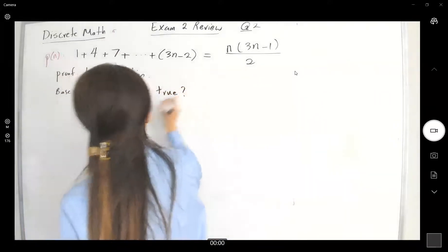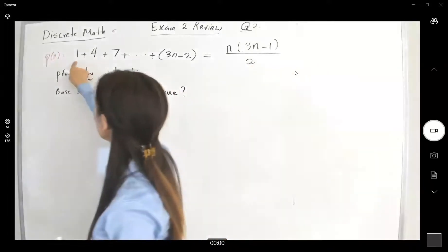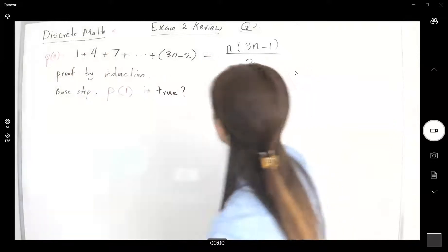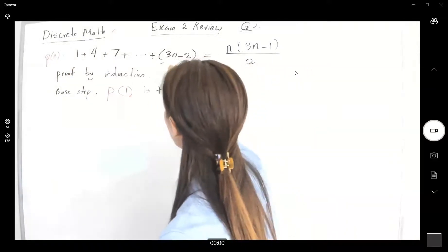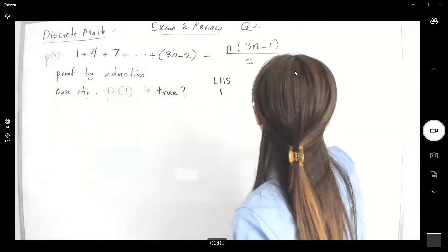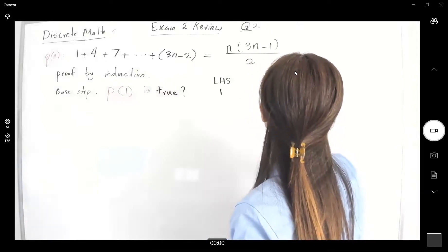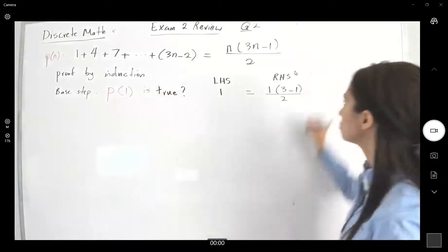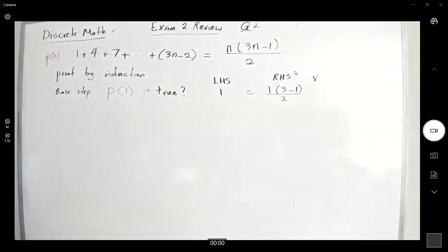Let me put a question mark next to it because I'm trying to prove this. On the left hand side, if I plug in one, I get one. On the right hand side, I have one times three minus one divided by two, which equals one. So left hand side and right hand side are both equal to each other. Now let's move on to the inductive step.